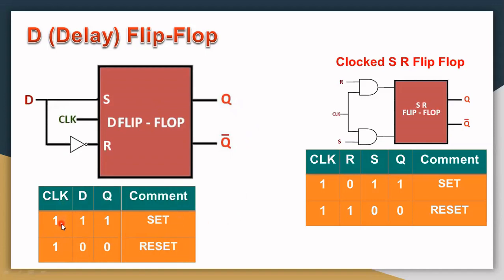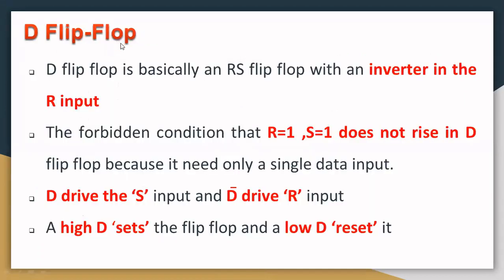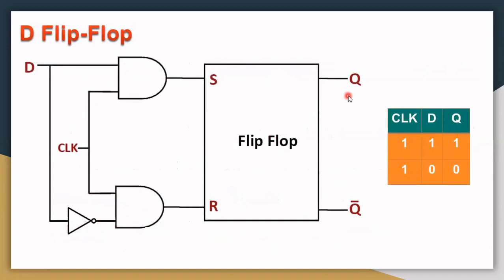The D Flip-Flop is also a clocked flip-flop. When clock is equal to one and D is equal to one, Q is equal to one — it goes to the set state. When D is equal to zero, Q goes to zero — that is the reset state. The D Flip-Flop is basically an RS flip-flop with an inverter on the R input. The forbidden condition where R and S are both one does not arise because D drives S directly and D-bar drives R. A high D sets the flip-flop; a low D resets it.